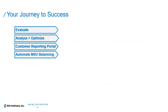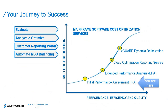The journey to success starts in stage one with the initial performance assessment, where we take your data and present opportunities to improve performance as well as reduce cost. If you like what you see, you may sign up for the extended performance analysis (EPA), which is a paid service offering. We then do an extensive deep dive analyzing both the tuning angles and MSU MRC cost reductions and make specific recommendations to execute on.